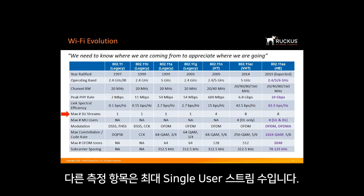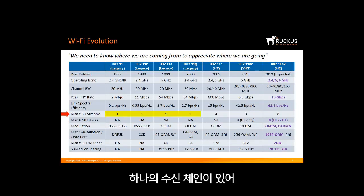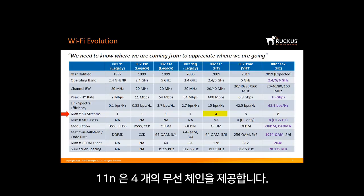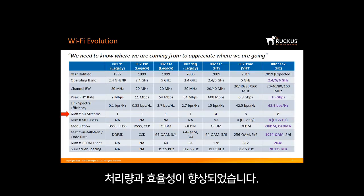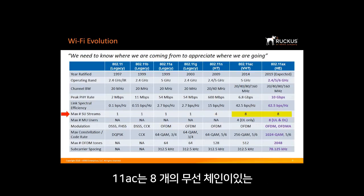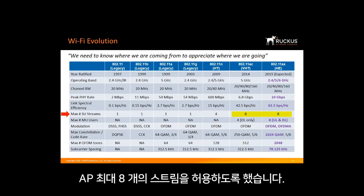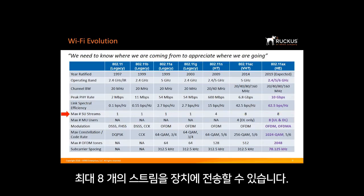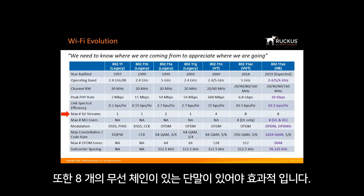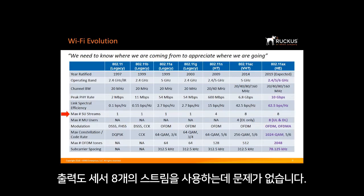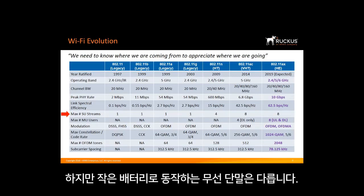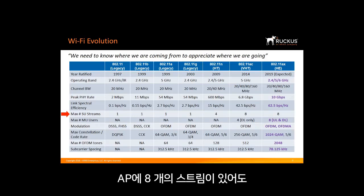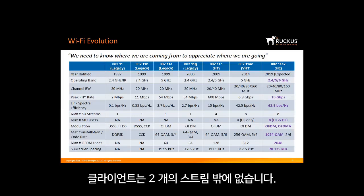Another metric is the maximum number of single-user streams. The original standard had one transmit and one receive chain, allowing one stream of data. Then 11n came along with four radio chains, enabling four parallel streams to the same device. 11ac allowed as many as eight streams, requiring APs and clients with eight radio chains. However, clients are small and battery-operated — Wi-Fi manufacturers don't build eight-chain clients. Clients usually have only one or two chains, so even with eight streams on the AP, a client may only be capable of two streams.